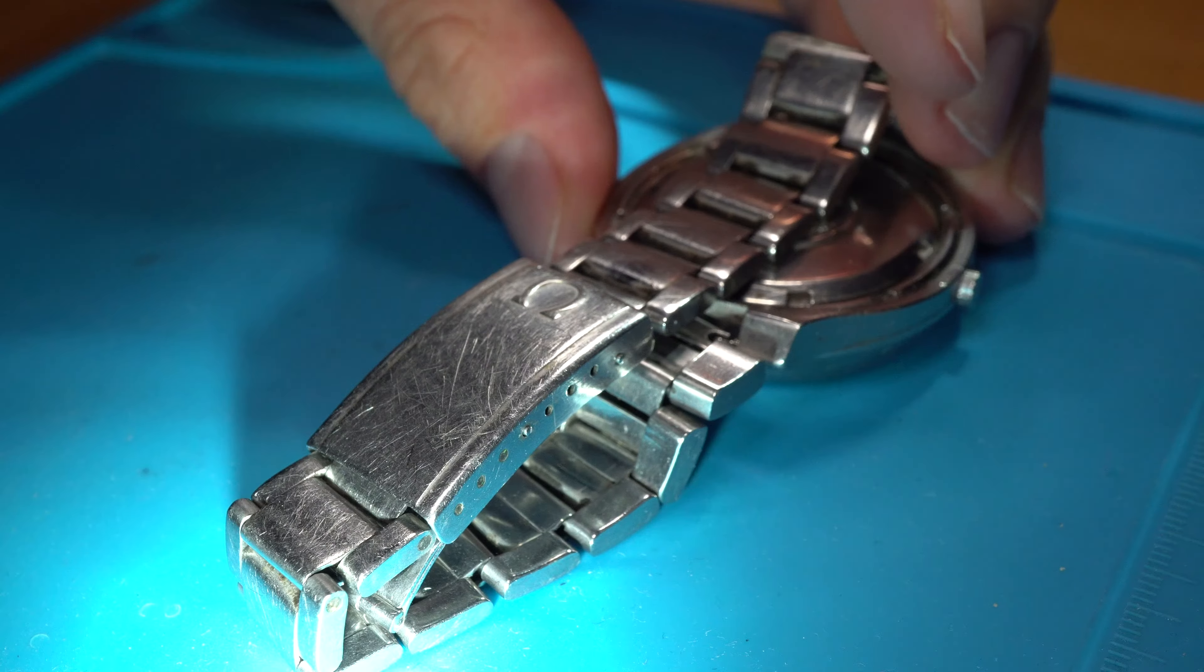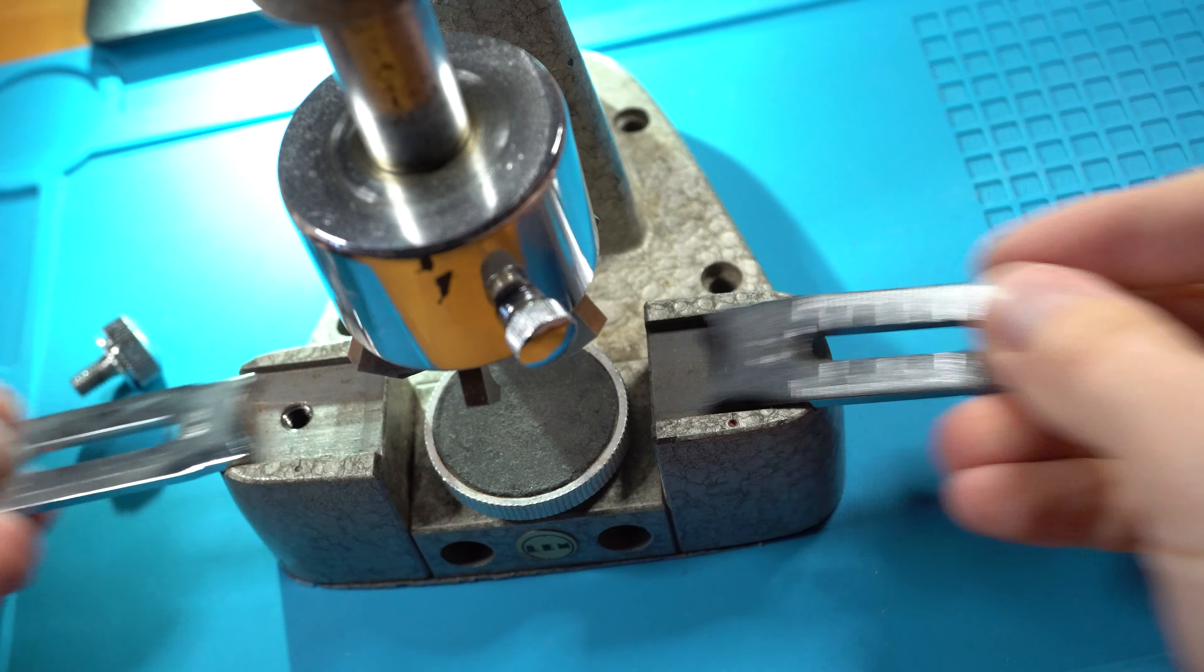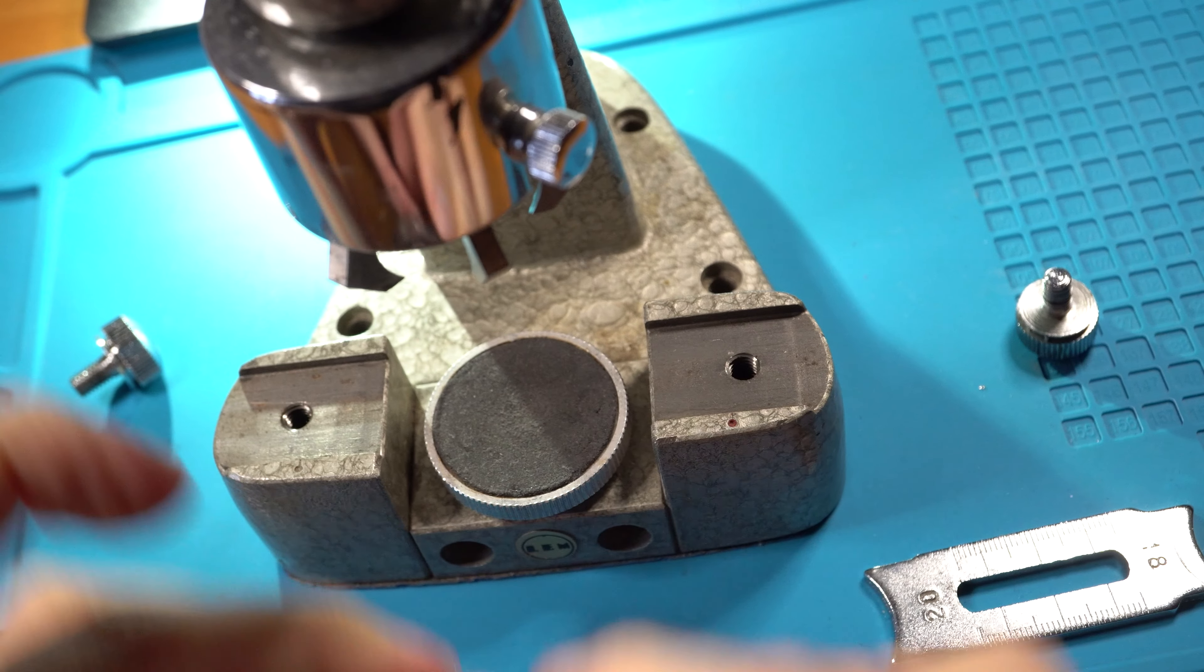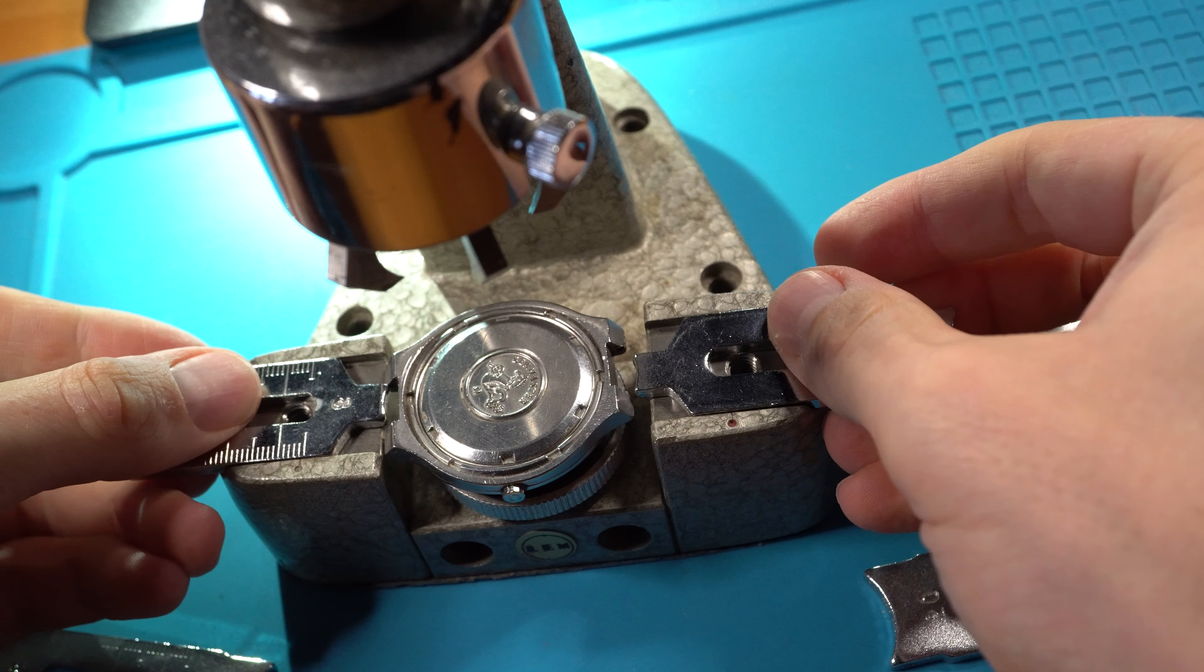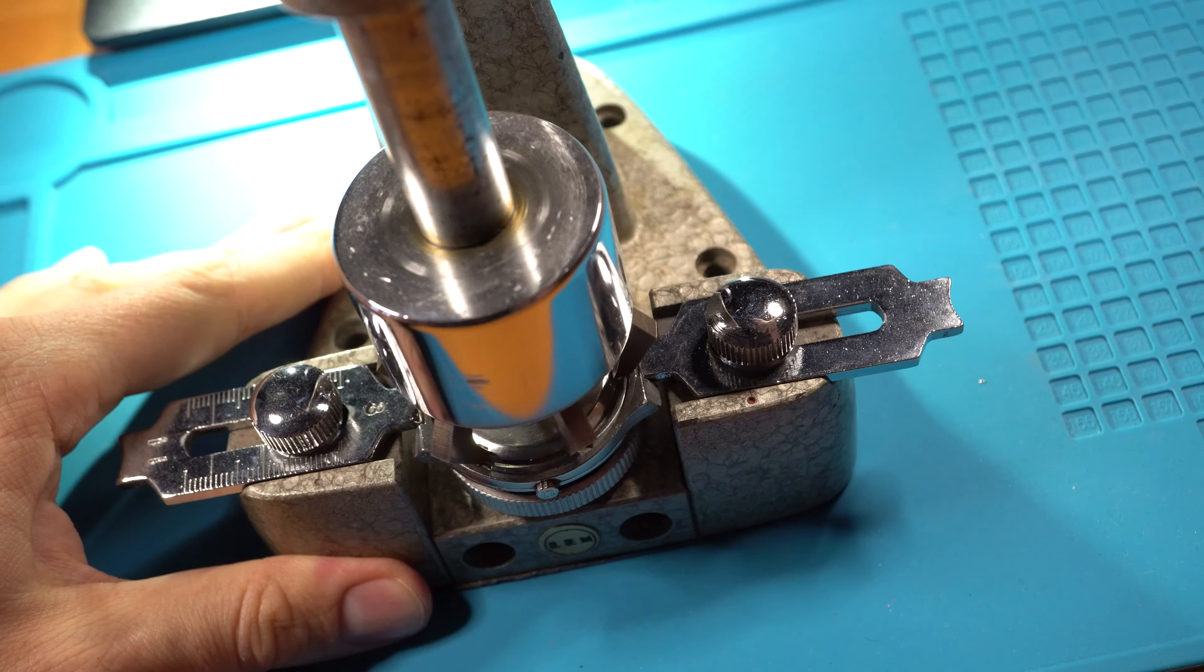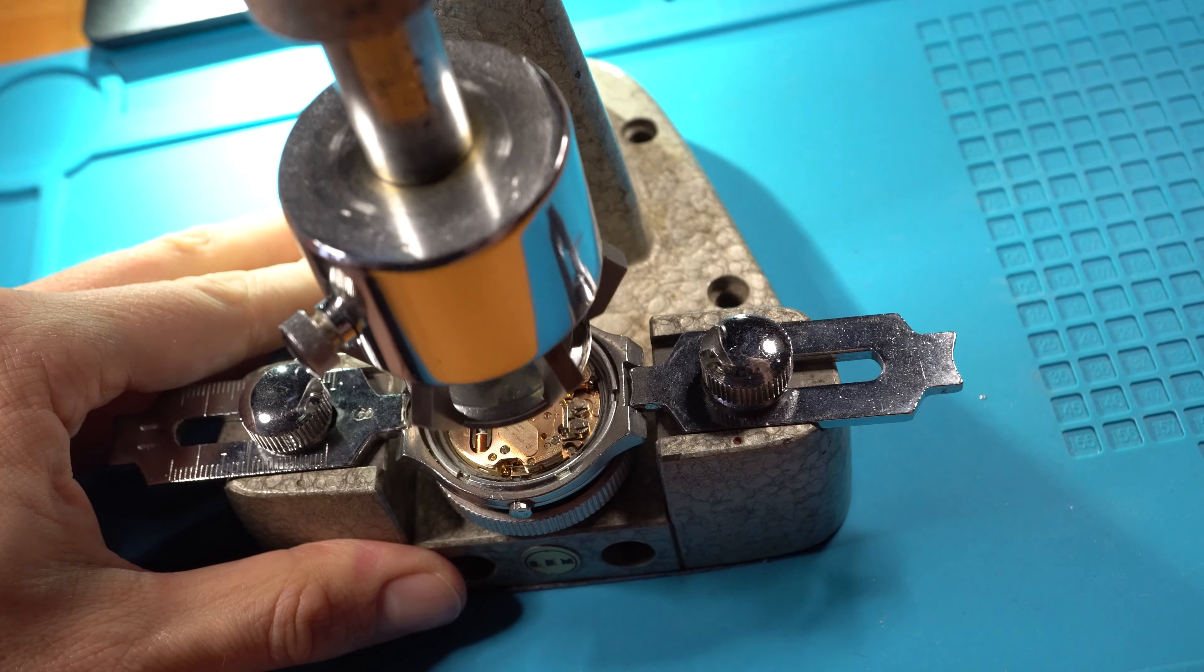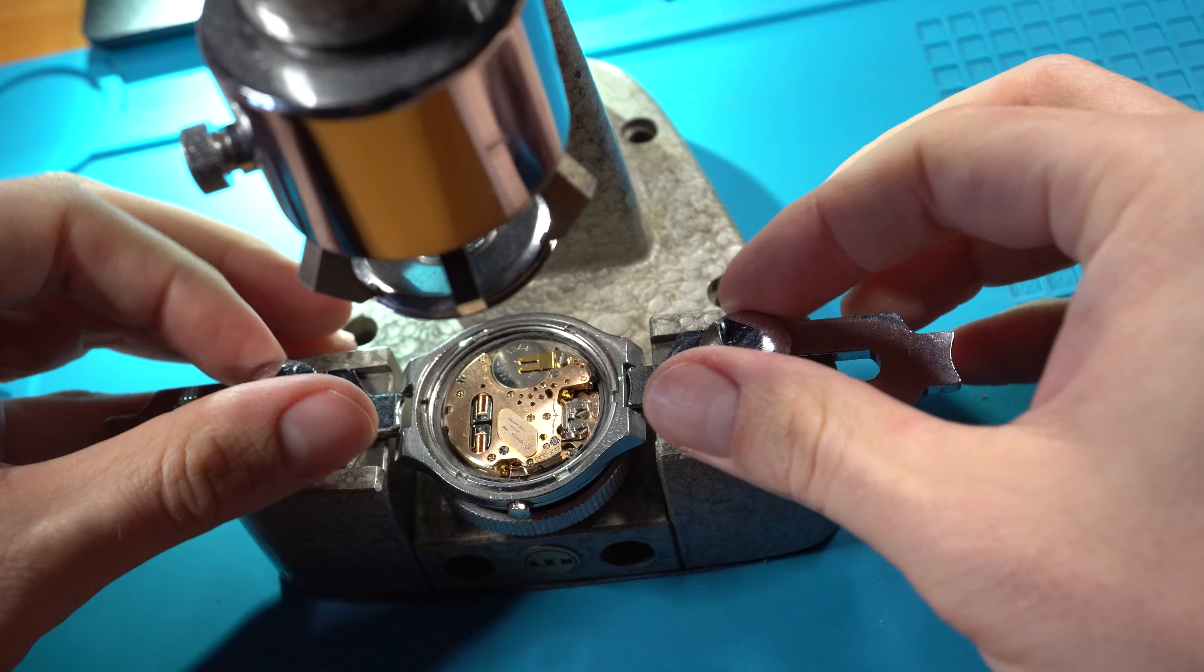This here is just designed to take off the case back of screw back cases. These metal parts are supposed to fit in between the lugs in order to fixate the watch while the case back is removed. So I chose these small ones here, and now the case back can be screwed off and lifted, which gives us an opportunity to look at the movement inside.